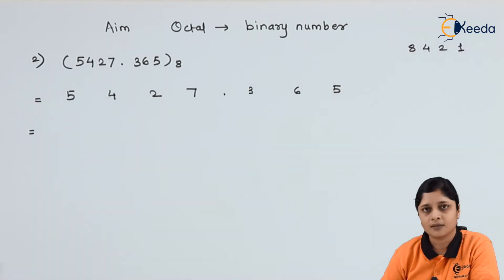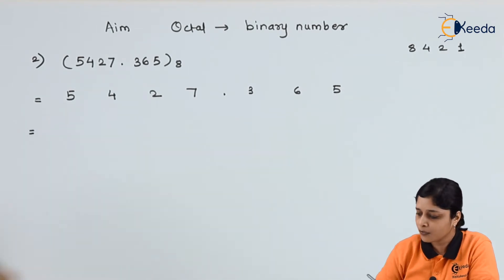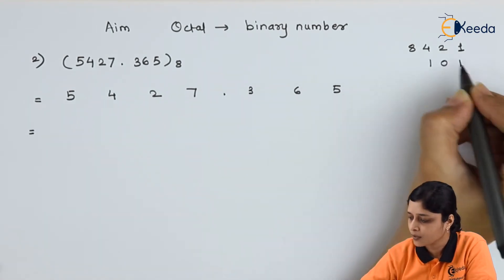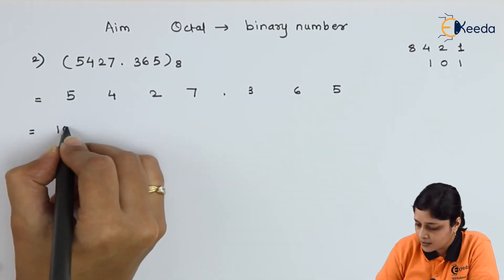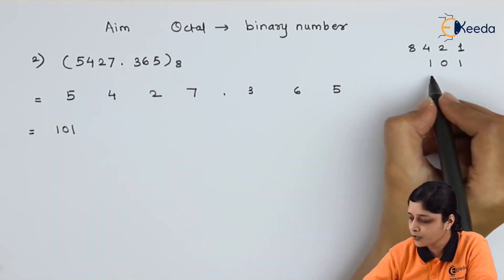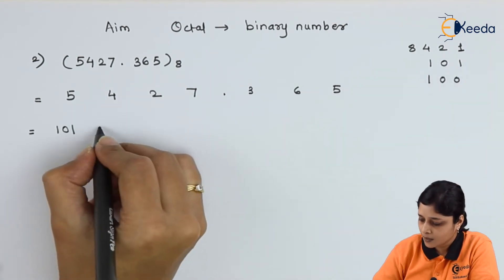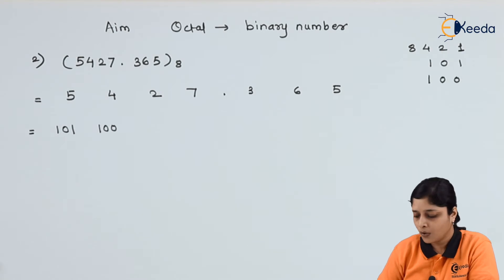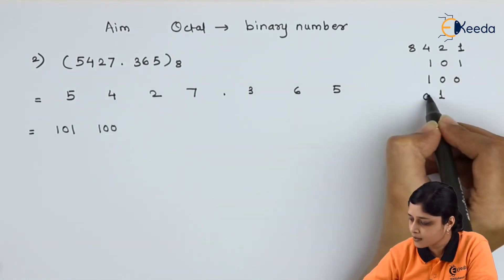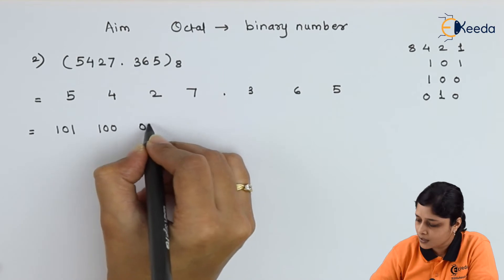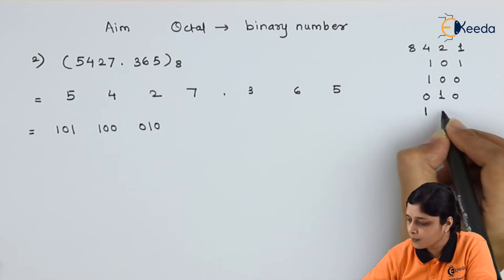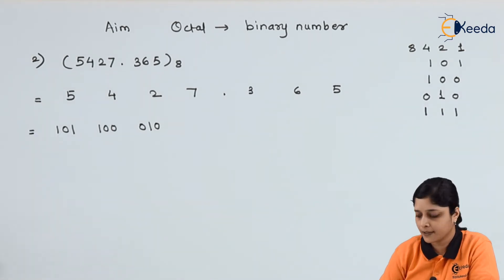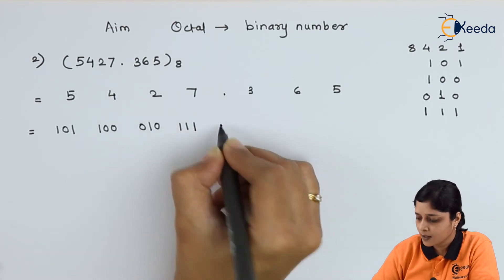Write down 8-4-2-1 and calculate the binaries. For 5: 4 plus 1 is 5, write 1 0 1 — it consists of 3 bits only. For 4: write 1 0 0. For 2: write 0 1 0. For 7: 4 plus 2 plus 1 gives you 7, write 1 1 1.